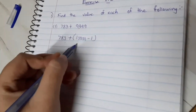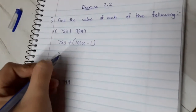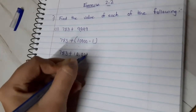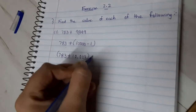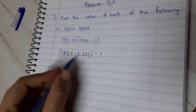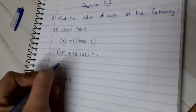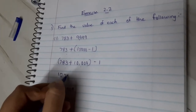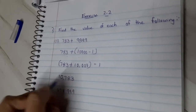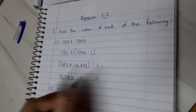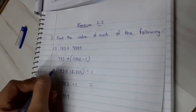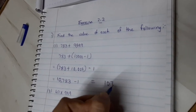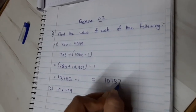Now we will group these two numbers together. So 783 plus 10,000 minus 1. If you add these numbers, you will get 10,783 minus 1. So your answer will be 10,782.